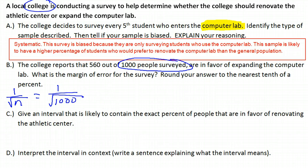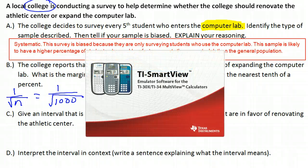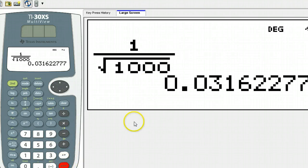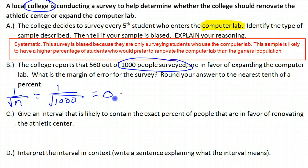Let's just take a peek in the calculator for that. There's my 1 out of the square root of 1,000. I'm getting 0.0316. But we need this as a percent, so this is going to be 3.2 percent. There's my margin of error, plus or minus 3.2 percent.